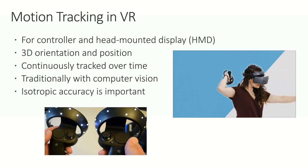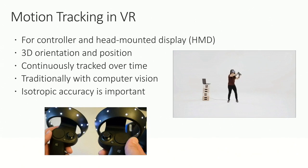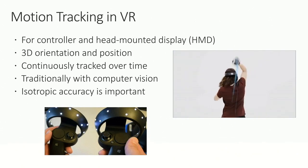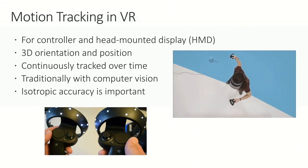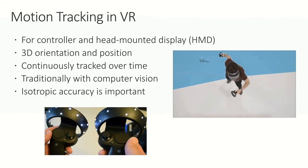Thank you everyone. Thanks for the introduction. Next I'm going to introduce the intern project: sensor fusion for learning-based motion estimation in VR. Motion tracking in VR is important. During the time series we always want to know where the controller is and where the headset is — specifically its 3D orientation and spatial position. By this information we can properly render content in VR space and provide a better gaming experience.